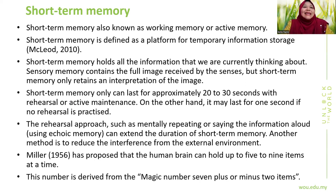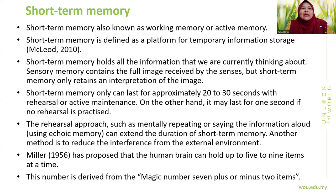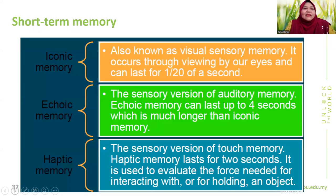Emotion facilitates the transfer of memories from short-term to long-term memory. Long-term memory can be implicit or explicit. Implicit memories are stored unconsciously and effortlessly; they help you carry out actions without thinking and are influenced by previous experiences. They include procedural memory (knowledge of how to do things), and priming (activation of knowledge through exposure). Explicit memory, also known as declarative memory, requires effort and consciousness. It can be episodic (discrete personal events, first-hand experiences) or semantic (facts, concepts, and general knowledge about the world that you can put into words).